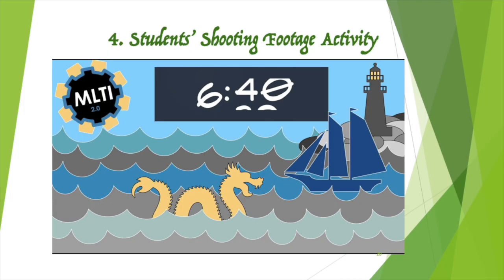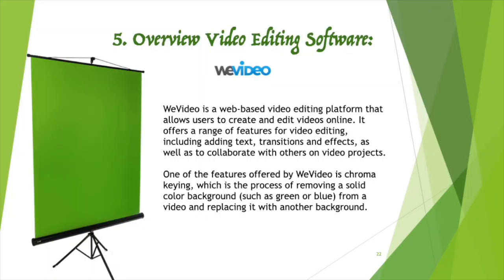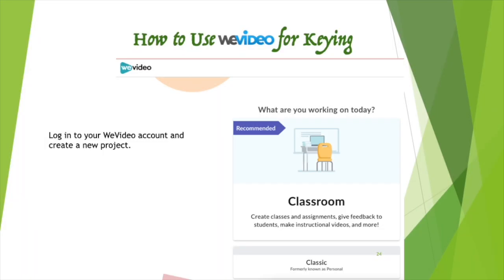Students shooting footage activity — 15 minutes. Part 5: Overview of video editing software. WeVideo — what is WeVideo? WeVideo is a web-based video editing platform that allows users to create and edit videos online. It offers a range of features for video editing, including adding text, transitions, and effects, as well as to collaborate with others on video projects. One of the features offered by WeVideo is chroma keying, which is the process of removing a solid color background such as green or blue from a video and replacing it with another background. Please follow the instructions.